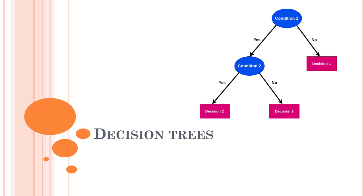Hi everyone, welcome back to this course of machine learning and data science. Today we are going to learn about decision trees. We have covered a lot of classification algorithms — decision tree is one of the classification algorithms which is quite famous. After this, we are going to jump into random forest, an advanced version of decision trees.